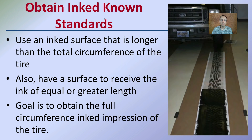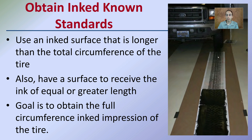Obtain an ink of the known standards. It's important to get the entire circumference of the tire. You can use an ink surface that's longer than the total circumference of the tire to ensure you get everything, and also have the surface to receive the ink of equal or greater length. You want to make sure you ink the entire tire and have an area where you can transfer that tread over the entire surface, because the goal is to obtain a full circumference ink impression for that tire.